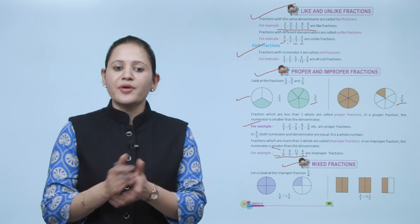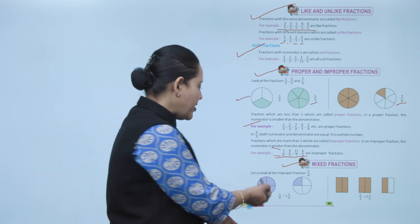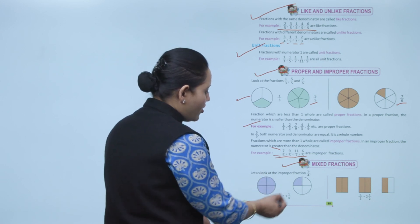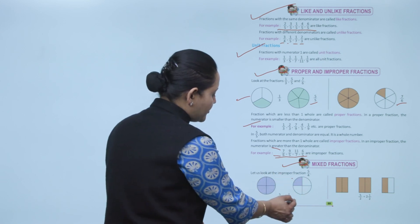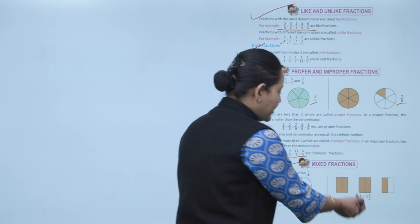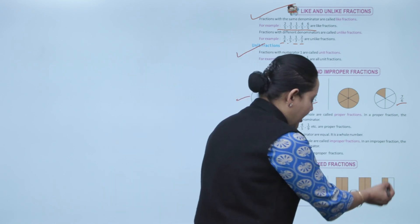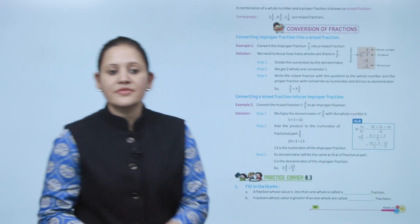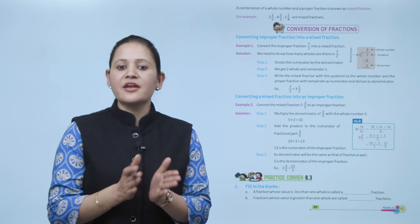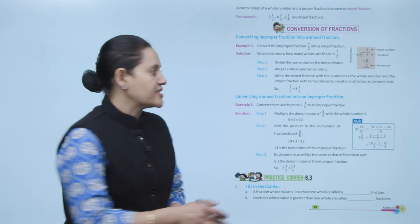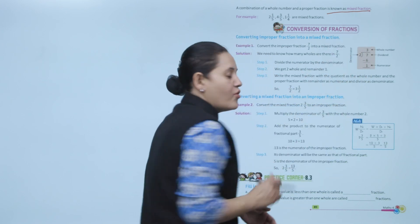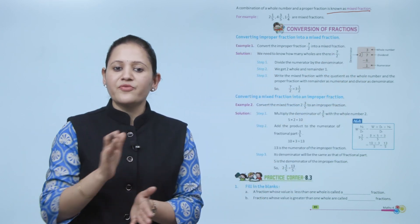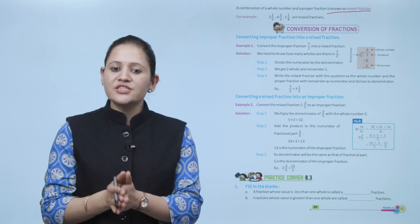The improper fraction 5 by 4 can be written as 1 whole and 1 by 4. Similarly, 5 by 2 equals 2 whole and 1 by 2. A combination of a whole number and a proper fraction is known as a mixed fraction. Examples: 2 and 1 by 5, 4 and 3 by 5, 1 and 1 by 4 — all these are mixed fractions. Next is conversion of fractions.